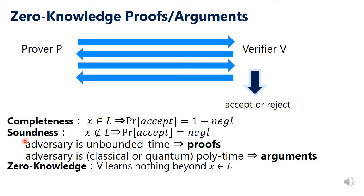Especially, when we consider an unbounded time cheating prover, we call the protocol proofs. And if we consider a polynomial time adversary, then that is called arguments. The third property is zero-knowledge, which means that the verifier learns nothing beyond the fact that the statement is true.